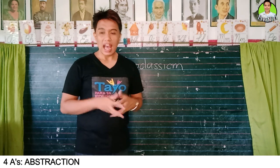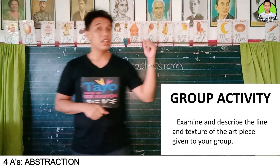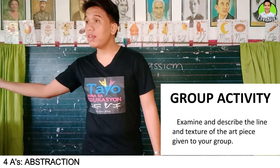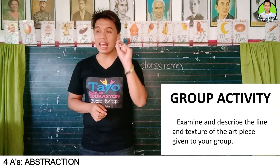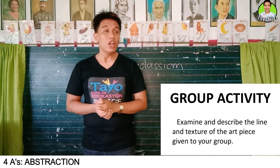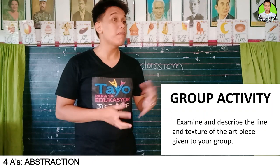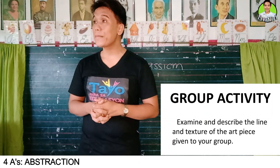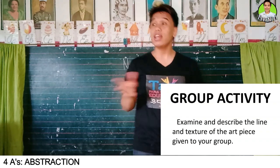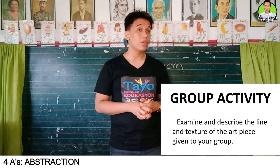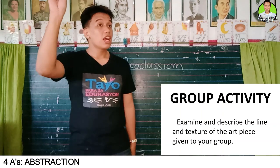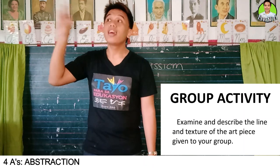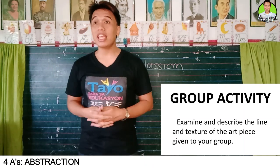Now to understand our lesson further, let us have a group activity. I will group you into three again. I will give each group an art form and you have to describe the line and the texture of the art form. Write a brief description about what you observe on a piece of paper. But before we continue, let us recall our guidelines. What are those three rules? Read the directions carefully. Cooperate with your group mates. And respect your group mates. You can now begin the activity.